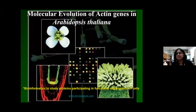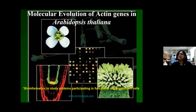For class today, we will use the example of molecular evolution of actin genes in Arabidopsis thaliana. Actins are major components of the cytoskeleton. This particular example highlights how bioinformatics can be used to study gene products which participate in the functional organization of cells.